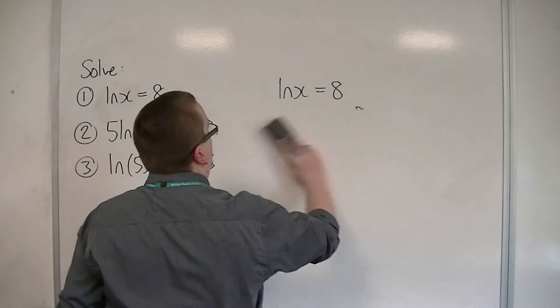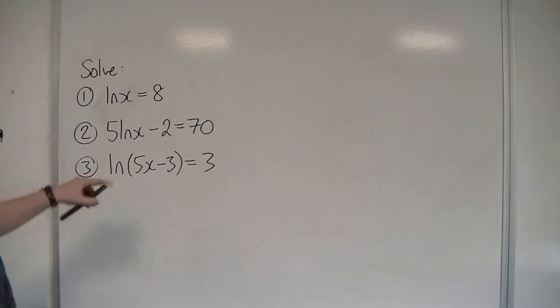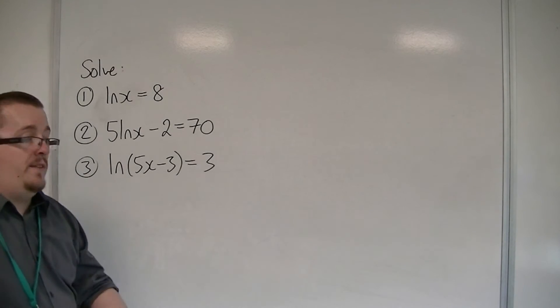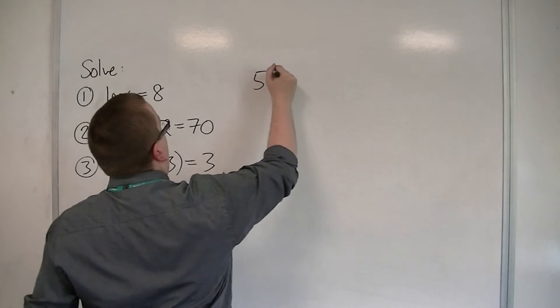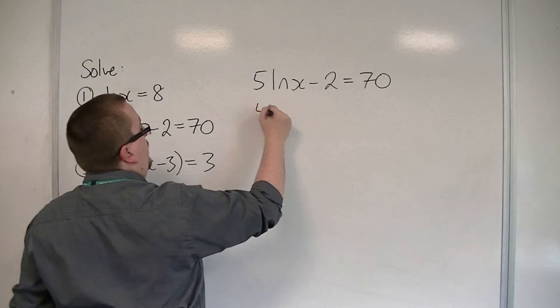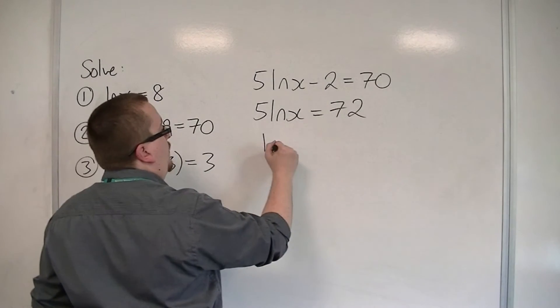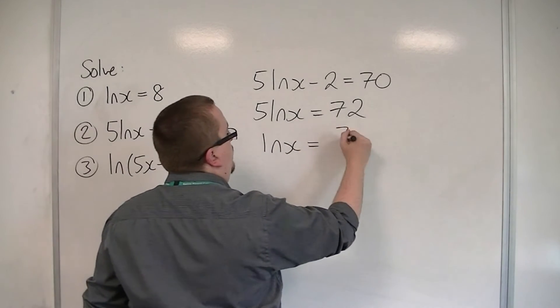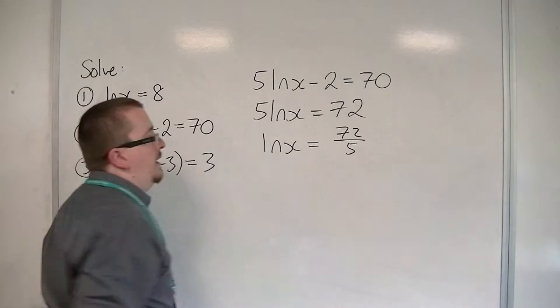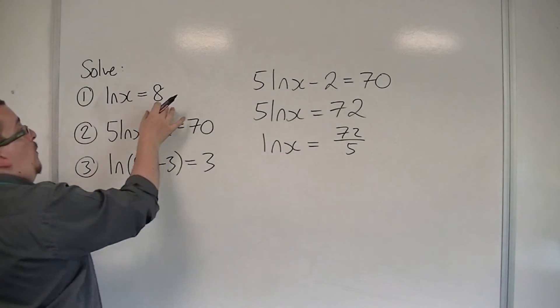Let's have a look at number 2. 5 log x minus 2 is equal to 70. So first of all, add 2 to both sides. Then what you want to do is divide both sides by 5. And then you're at a stage very similar to what we had before.